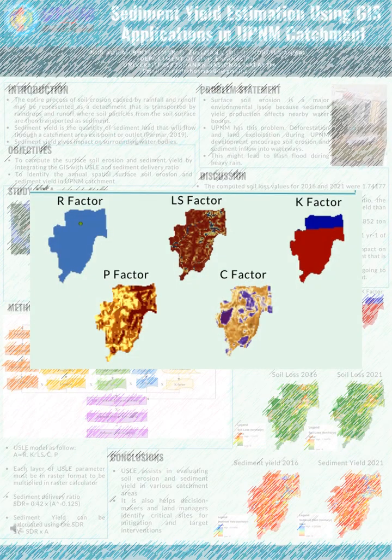The figures show the spatial distribution map of each parameter of the RUSLE method: R-factor (rainfall erosivity), L-factor (slope length), K-factor (soil erodibility), P-factor (support practice), and C-factor (cover management).